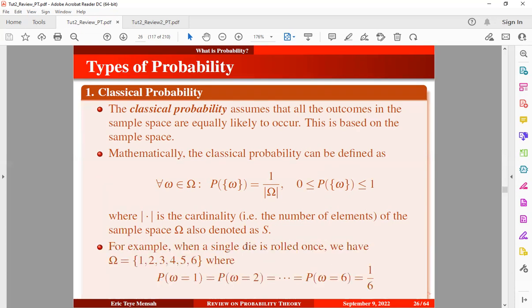For example, when a single die is rolled once, we have the sample space one, two, three, four, five, six. The probability of observing any element in the sample space will be one out of six. The six here is for the cardinality. You just have to count the number of elements in the sample space: one, two, three, four, five, six. So we have six.